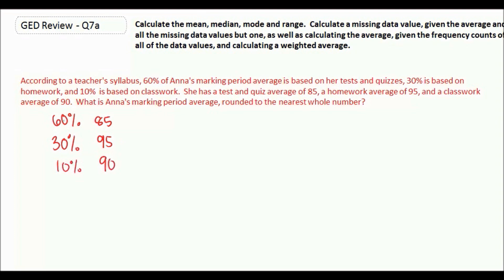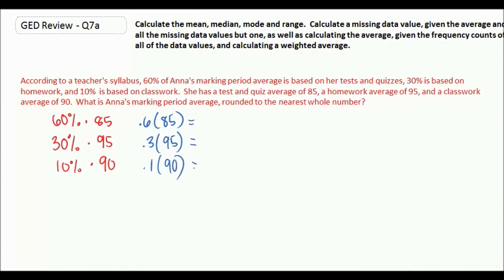So what we're going to do is multiply the percent by the respective grade. However, when we multiply by percent, we have to remember to change the percent to a decimal. So what we're really doing here is .6 times 85, .3 times 95, and .1 times 90. And then we're going to add those up together.